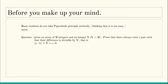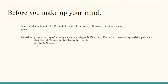For those who think it is easy, try to solve this problem using the pigeonhole principle: given m integers where m is strictly greater than n, and also a positive integer n, prove that there always exists a pair (a, b) such that the difference a minus b modulo n equals zero — meaning the difference is divisible by n.